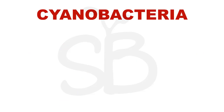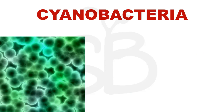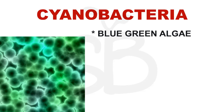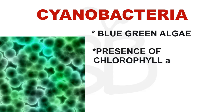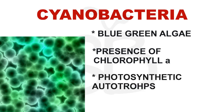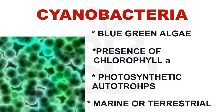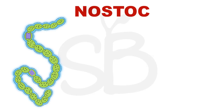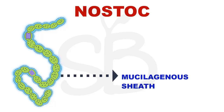Here is an example of cyanobacteria. Cyanobacteria is also called blue-green algae. This is a blue-green color. It contains a substance called chlorophyll A, just like plants. This is a photosynthetic autotroph. Cyanobacteria is unicellular, colonial, or filamentous, and can be marine or terrestrial. This colony has a gelatinous sheath called a mucilaginous sheath.